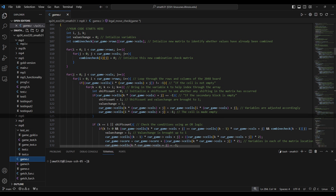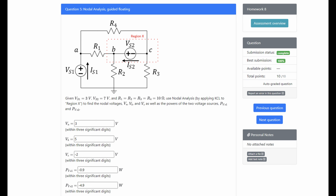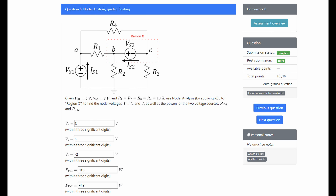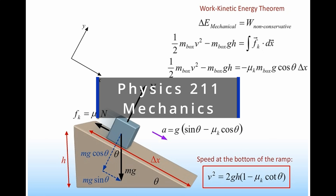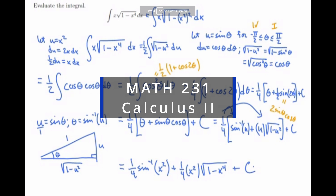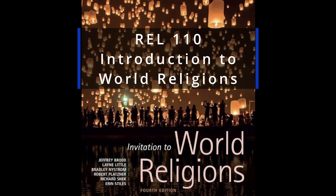First up is ECU-220, Computer Systems and Programming, which focuses on computer runtime stack analysis, encoding in LC3 assembly, C, and C++. Next up is ECU-110, Introduction to Electronics, which is all about circuit analysis. After that, we got Physics-211, Mechanics, which goes over kinematics, momentum, and rotation. For math, we got Math-231, Calculus 2, where we are learning about improper integrals in diverging and converging series. Last but definitely not least, my easiest class, Religion-110, Introduction to World Religions — basically a super easy gen ed.